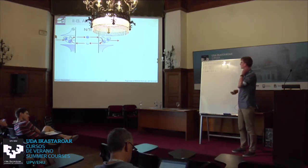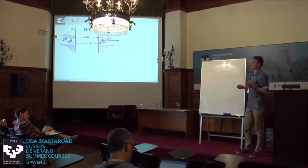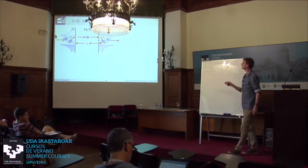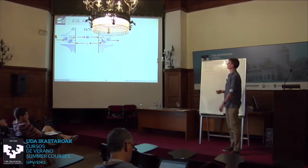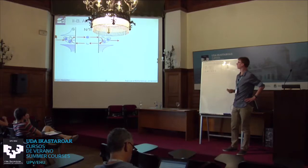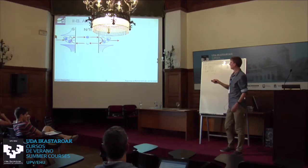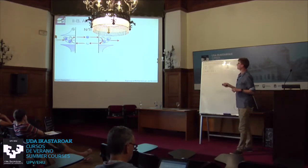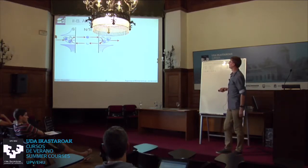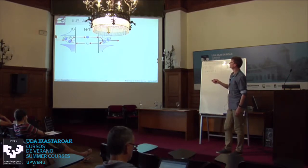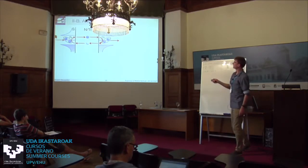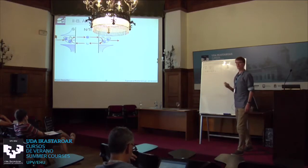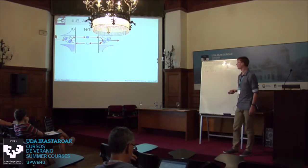We finished the lecture with Andreev reflections: an electron impinging on a superconducting interface is reflected as a hole and a Cooper pair is emitted into the superconductor. If you place two superconductors to form a Josephson junction, you form a cavity with resonant modes. The boundary conditions give rise to special Andreev bound states, which allow Cooper pairs to transfer from one condensate to the other, carrying most of the supercurrent in small mesoscopic systems.